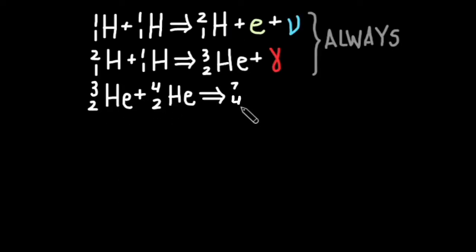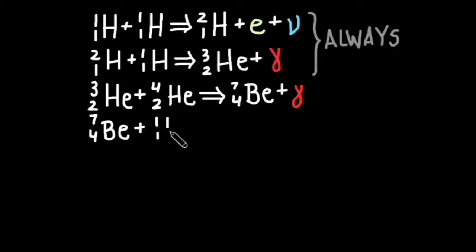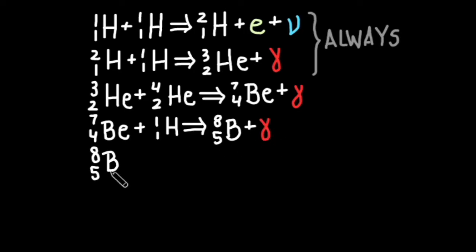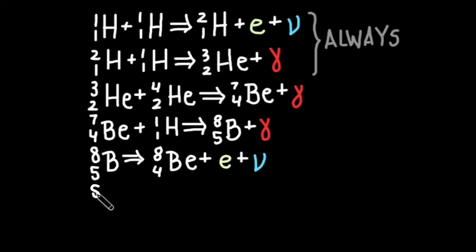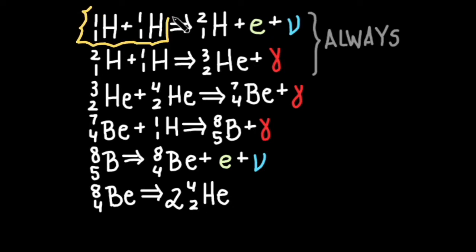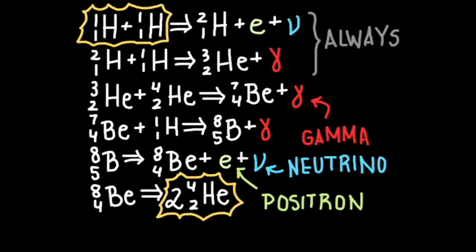In the PP3 reaction, beryllium is involved. This process yields a significant amount of energy in the form of gamma rays. Finally, two helium atoms will form.